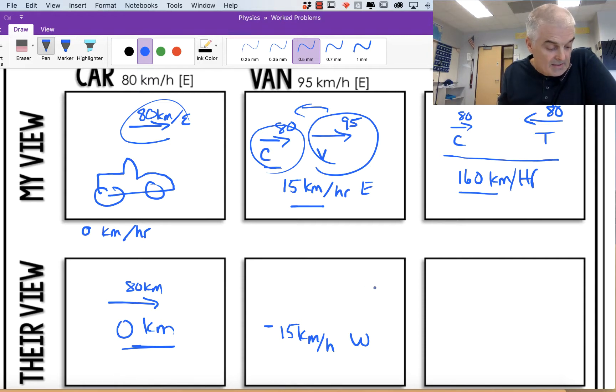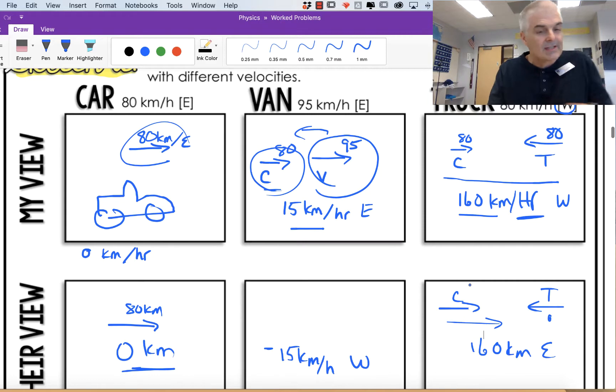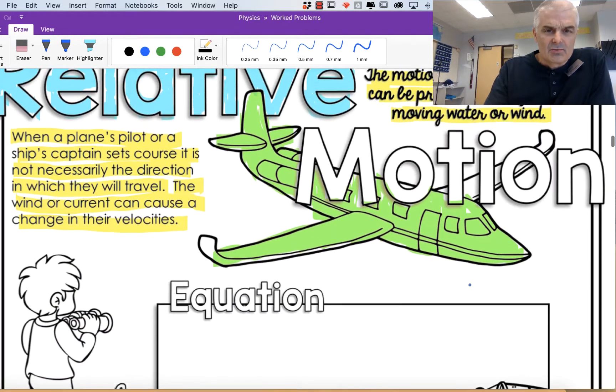And the truck, it looks like they're 160 to the west. But from his perspective, he thinks you're going 160 kilometers per hour to the east. From his perspective, you're coming at him at 160 kilometers per hour. So what we're doing is we're essentially adding the two numbers, sometimes with a little bit of subtraction as we do this.